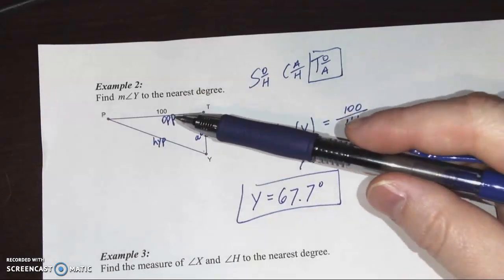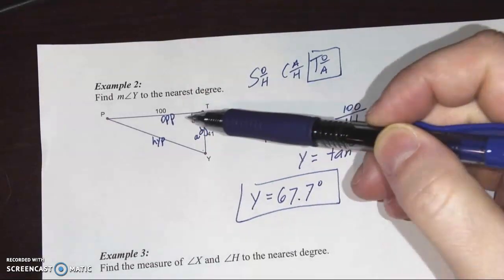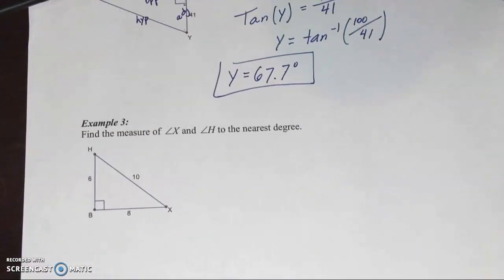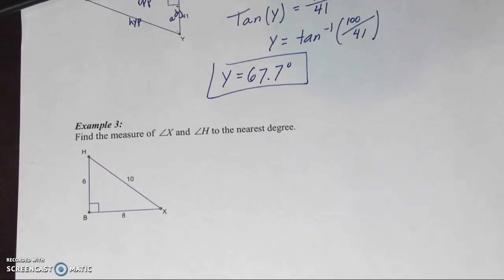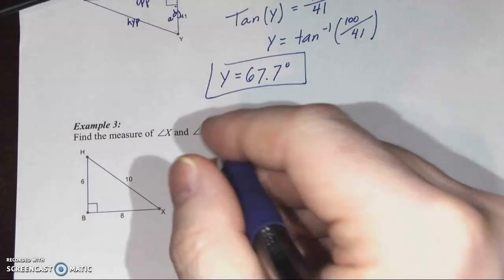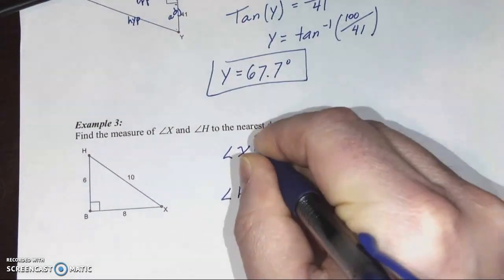Now, if we were looking for P, we wouldn't need to do all the trig. We would just subtract this angle and 90 from 180. Let's try example three. Why don't you pause it here. Set up your trig equations. You can start with angle x or angle h, which doesn't really matter. And then you won't have to use trig to find the other one. You just subtract those two from 180. I'm going to start. Pause it here. And then you can check your answer with me. I'll set up both using trigonometry.